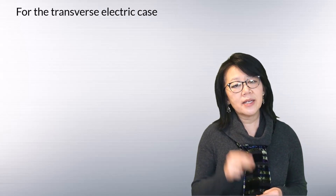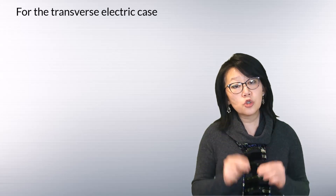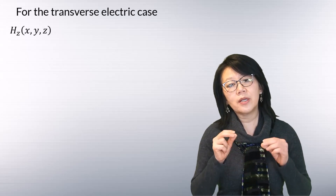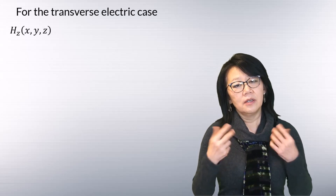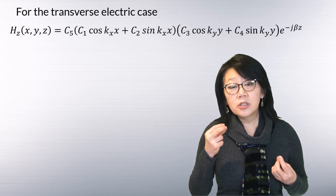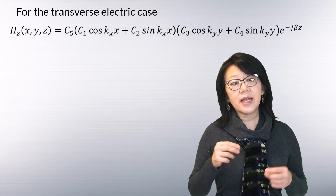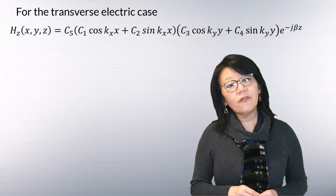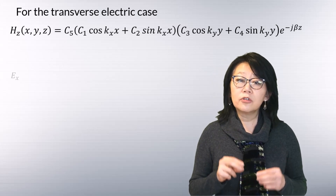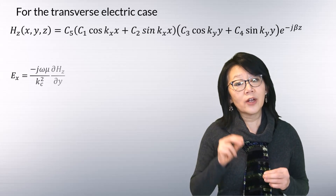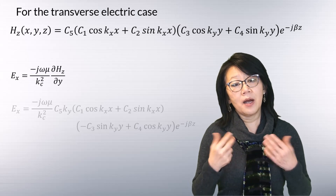To apply the boundary conditions, let's substitute the general function for the TE and TM cases. For the TE (transverse electric) case, the solution for the longitudinal magnetic field component Hz is given as shown. Since the boundary conditions can be applied to the electric field, the transverse field along x for Hz can be expressed.